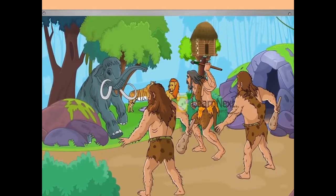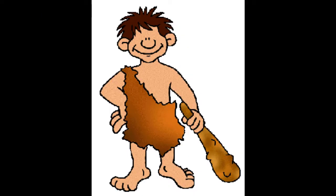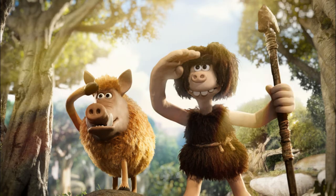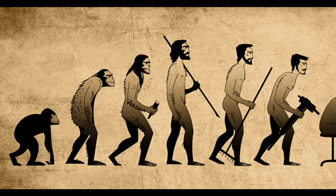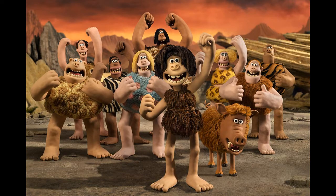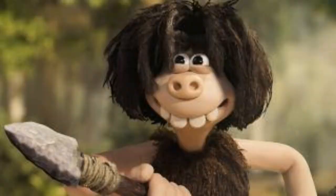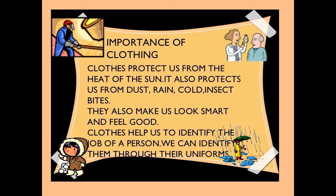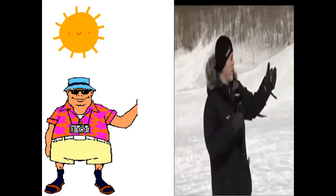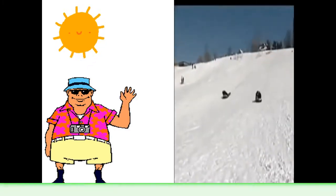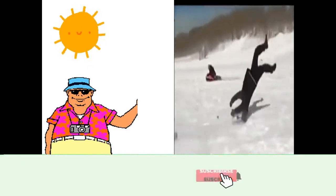Let us start from the early man. Early man did not know how to make clothes. He used to make clothes with the help of plants and animal products like animal skin or plant leaves. He also understood the importance of clothing. Clothes protect us from heat, sun, dust, rain, cold, and insect bites.